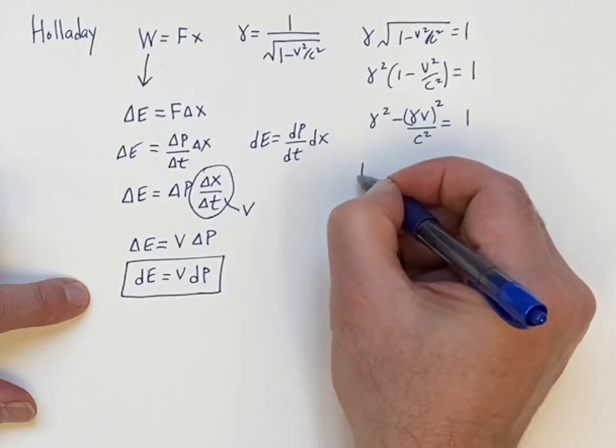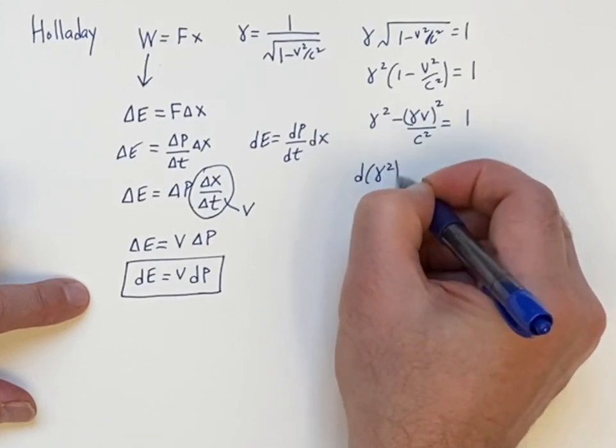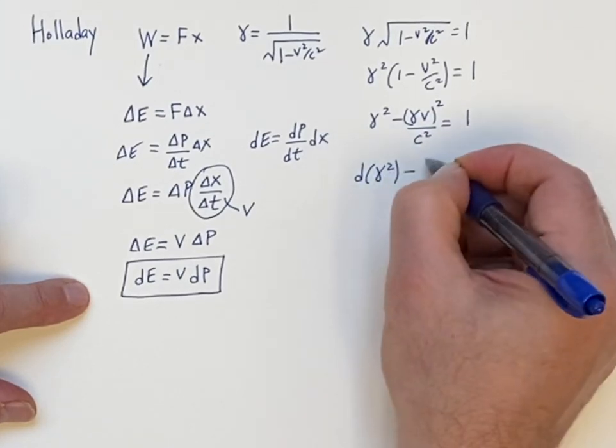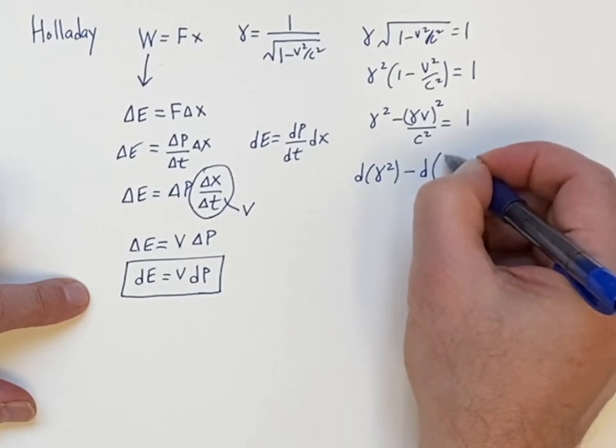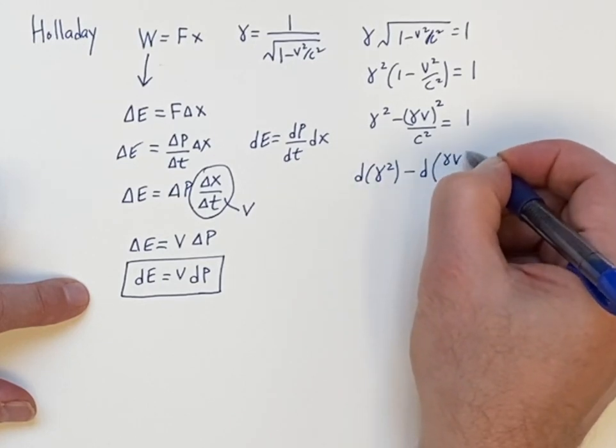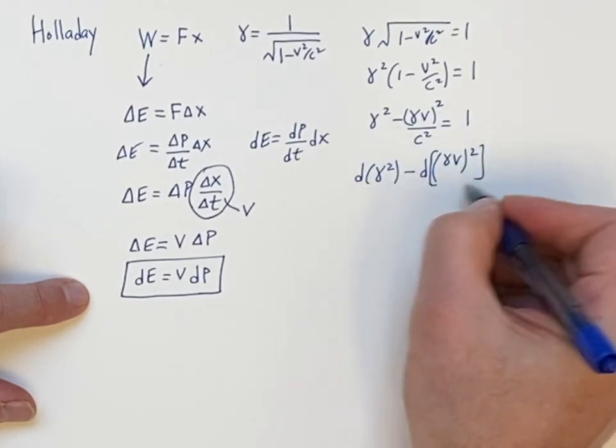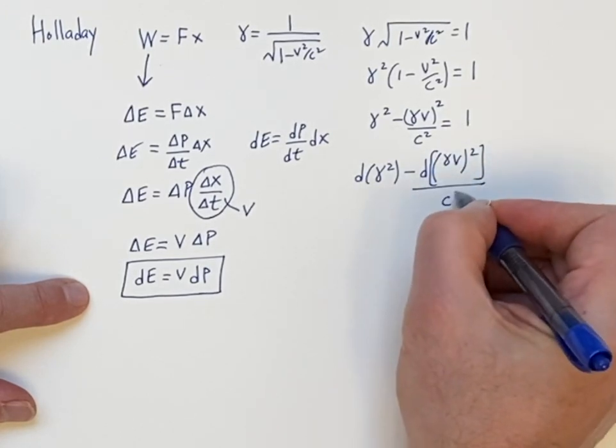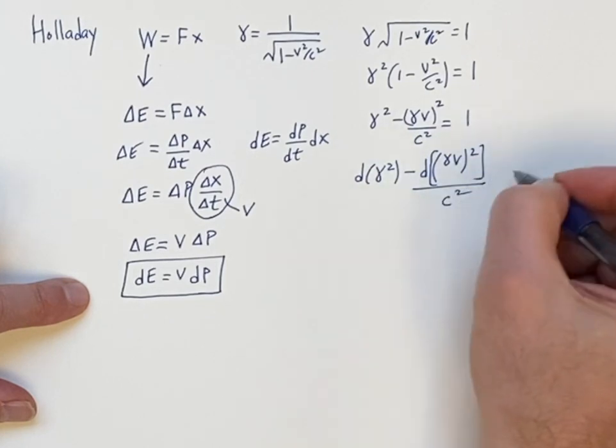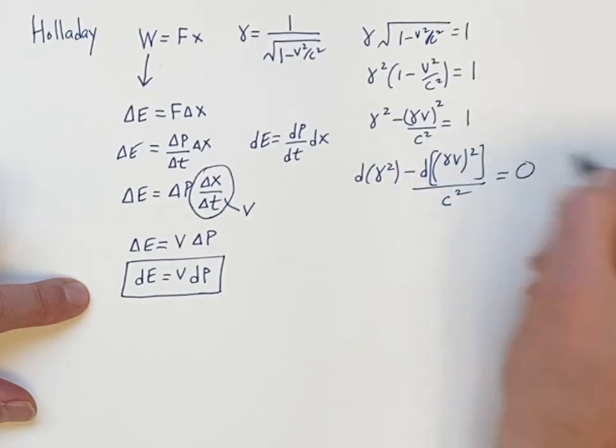And then we take the differential. The differential of gamma squared, the differential here of the second term. I'm going to go ahead and put a bracket around here, and then all that's over C squared, constant. And then d 1 is equal to 0.